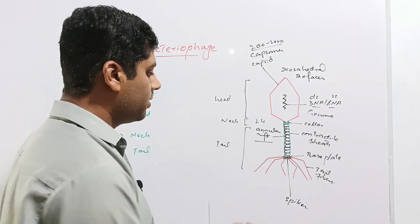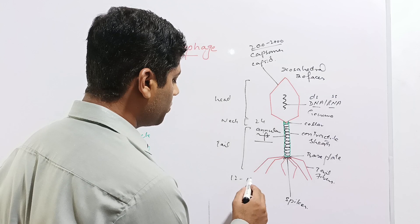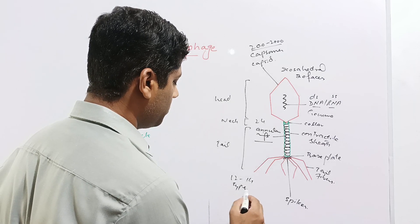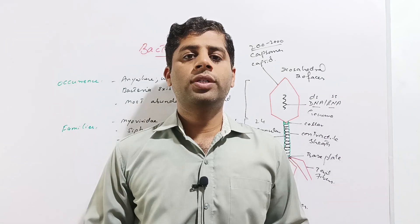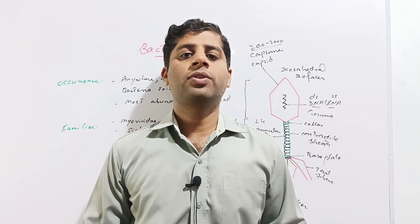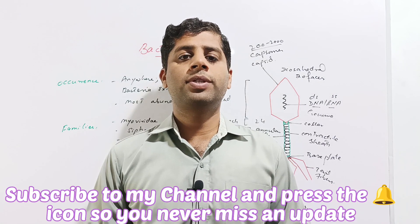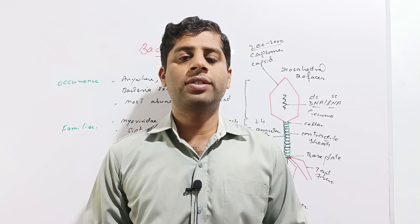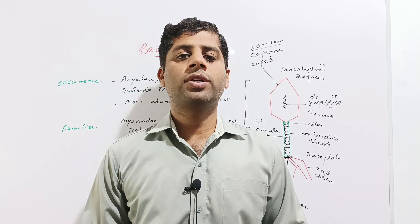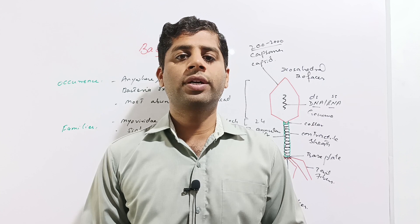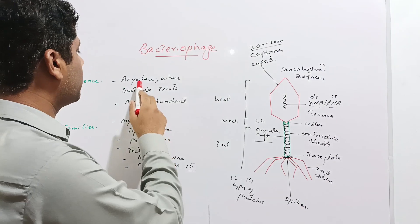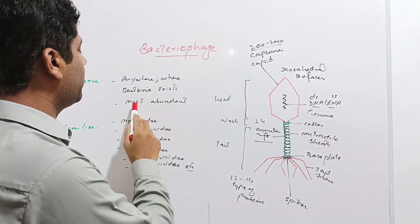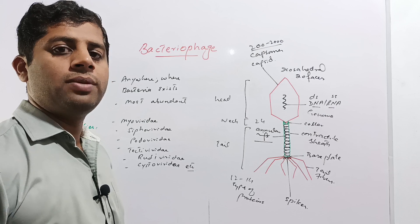It has also been determined that this bacteriophage is made up of 12 to 14 types of proteins. Bacteriophage are the most abundant organisms present on the earth. These are found everywhere where the bacteria exist — in the oceans, water bodies, land, and even in living organisms. The bacteriophage occurs anywhere where bacteria exist and it is even more abundant than the bacteria itself.